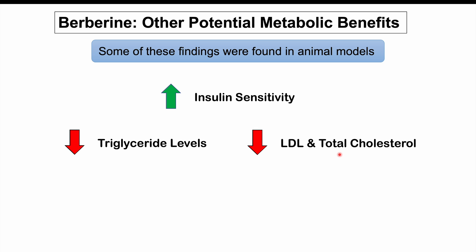Other studies discussed in the review noted decreased triglyceride levels and decreased LDL and total cholesterol levels — which aligns with the mechanism of AMPK activating ATGL for fatty acid catabolism and inhibiting HMG-CoA reductase for cholesterol synthesis. Another interesting finding in one particular study was increased brown adipose tissue, which is used as a source of thermogenesis to generate heat and is easier to burn off than white fat, suggesting that berberine may help convert white fat to brown adipose tissue.